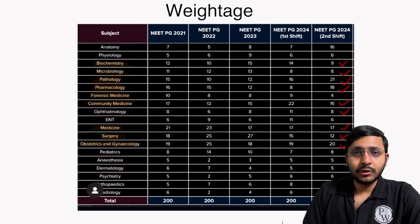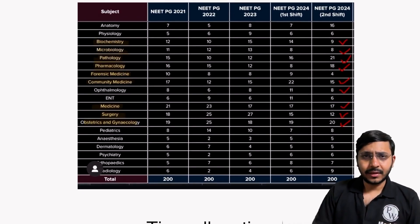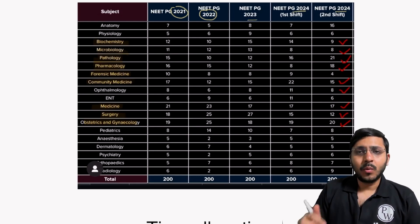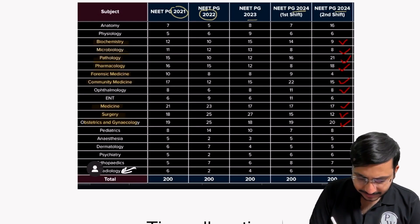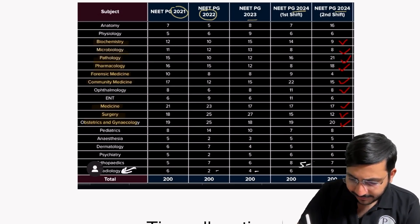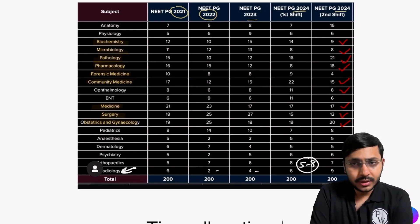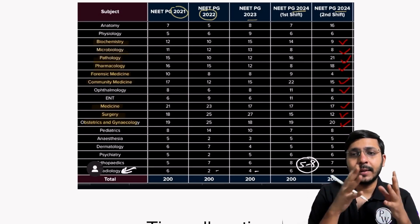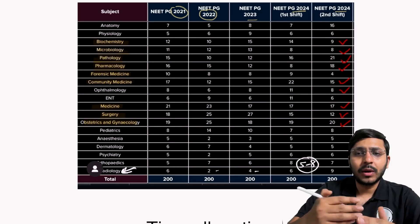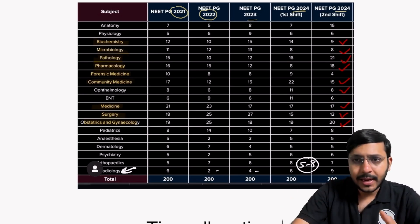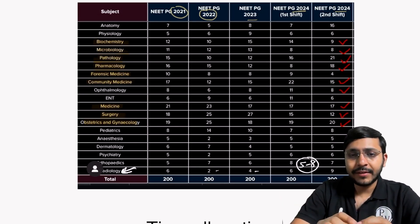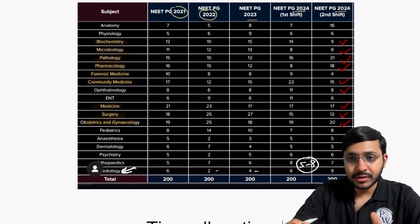Let's talk about the weightage of radiology questions. Looking at trends from NEET PG 2021, 2022, 2023, and two shifts of 2024 — radiology is at the bottom. Earlier, sometimes two to four questions, but now around five to eight questions come from radiology. If you include all clinical image-based questions with a radiology component, it might come to around 15 to 20. But pure diagnostic radiology questions are around five to eight — not a small number, and given you're spending just four hours, it's a pretty good deal.